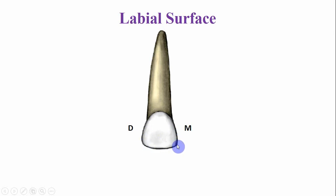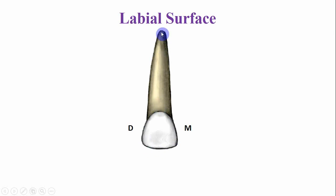These are the incisal angles — this is the mesial incisal angle and this is the distal incisal angle. These incisal angles are more rounded if you compare them with the central incisor. The root is longer as compared to the cervico-incisal dimensions of the crown. The root apex is more sharp if you compare it with the central incisor, where the root tip is more blunt.